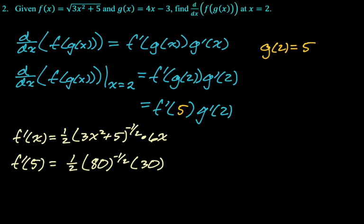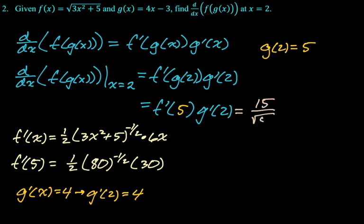And then I need to find g prime of 2 so I can plug it in. But g of x is 4x minus 3. So g prime is 4. So g prime of anything is gonna be 4, in particular g prime of 2. So really, I just need to multiply these numbers. So my answer is going to be, so the 30 over 2 is 15. So 15 over root 80 times 4, 60 over root 80, which I think is also 3 root 5, if you prefer to write your answer that way.